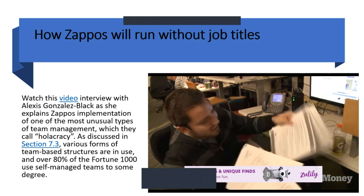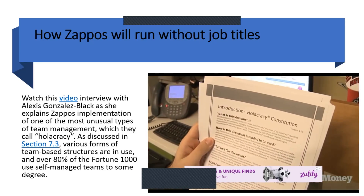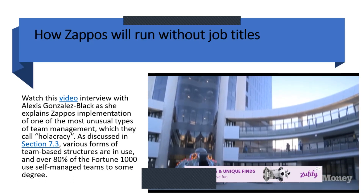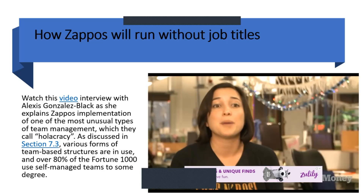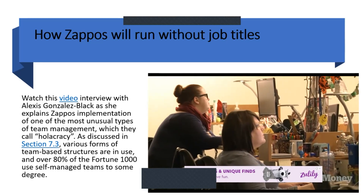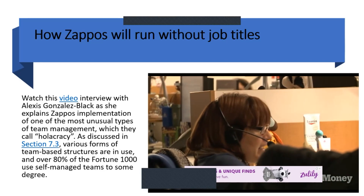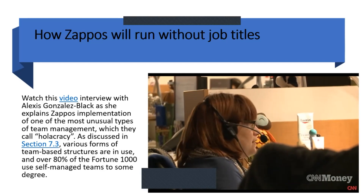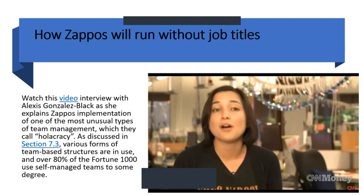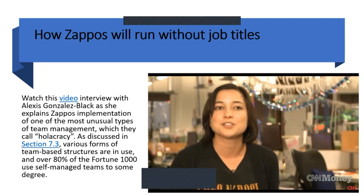We're asking managers to distribute authority to their teams and to get rid of their titles, which is an incredible ask. But we're also asking team members to step up and take ownership over their work in a way they haven't before. The idea is that when you distribute authority and people take ownership, you're not busy overseeing others' work — it frees up capacity so you can do all those projects that have been on your to-do list for months.